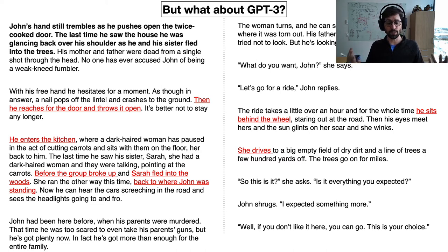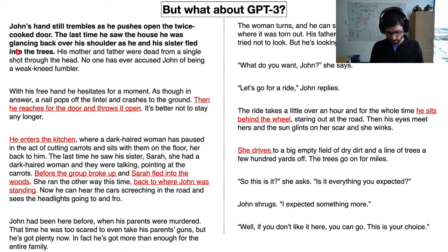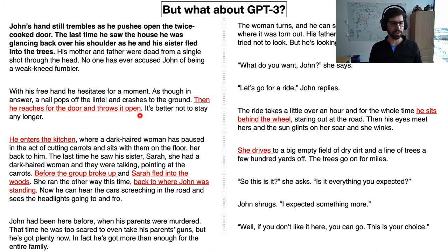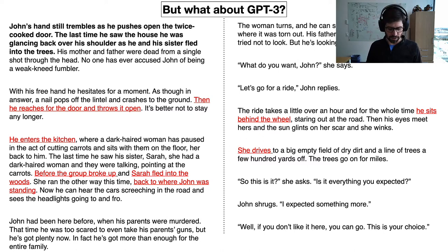What about GPT-3 and other larger language models? Here's an example output: the bold information is the prompt, and the generated text reads really well until you get into the details. I've highlighted inconsistencies: a character runs out the door and then is back in the kitchen; a sister named Sarah runs away and then goes back; John gets behind the wheel of a car, but then someone else is driving a little bit later. We get all these sorts of inconsistencies.